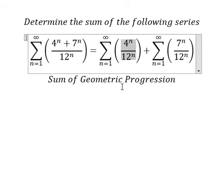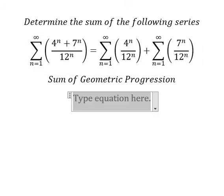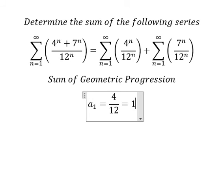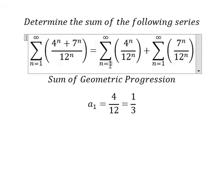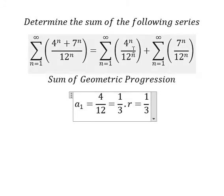For the first one, we have a₁, the first term, equals 4 over 12, or we can write it as 1 over 3. When n equals 1, we have 4 over 12. The common ratio r equals 1 over 3, because when we put n equals 2, we get another factor of 1 over 3.